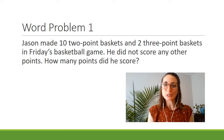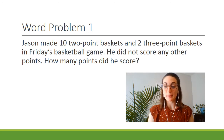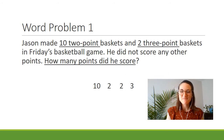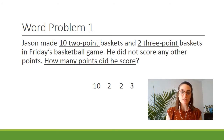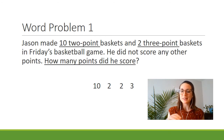Let's take a look at our first word problem. It says: Jason made ten two-point baskets and two three-point baskets in Friday's basketball game. He did not score any other points. How many points did he score? So the first thing I did was underline our key information. I see ten two-point baskets, and pay attention because even though it's written as T-W-O and it's harder to identify, we still need to count that as a number.